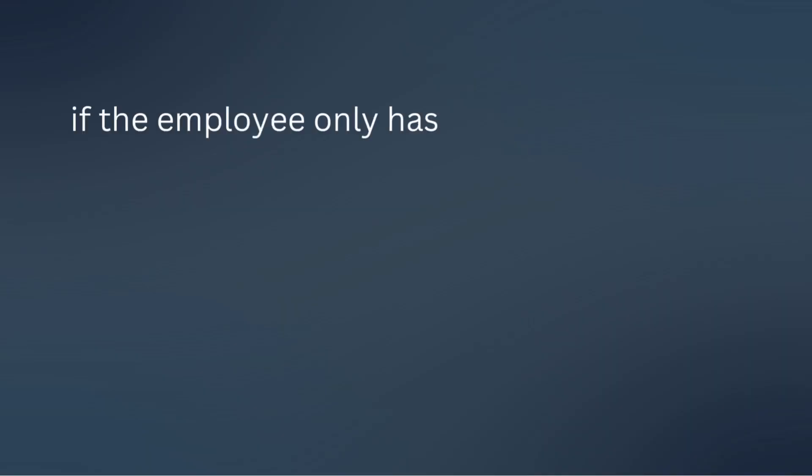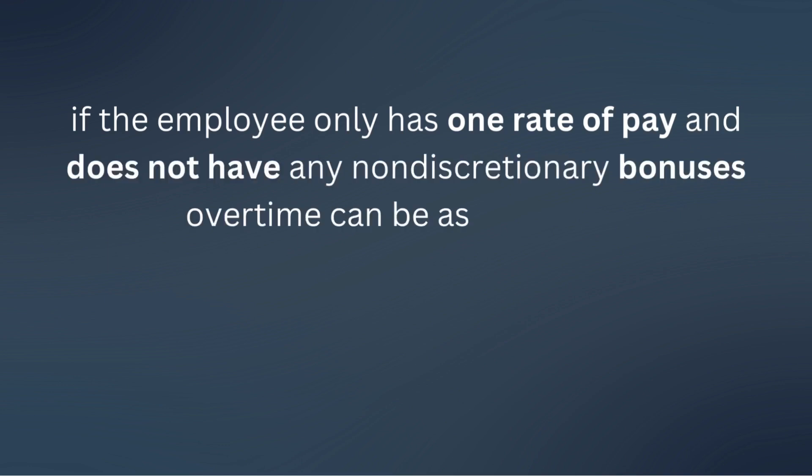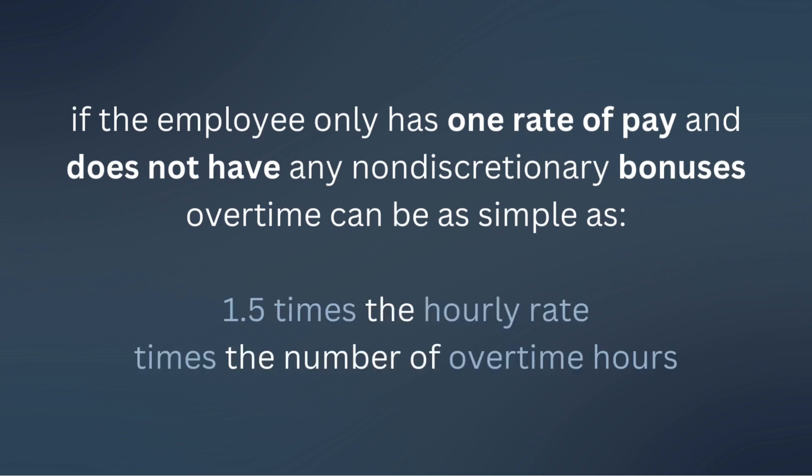If the employee only has one rate of pay and does not have any non-discretionary bonuses, overtime can be as simple as one and a half times the hourly rate times the number of overtime hours worked. But if an employee has different rates of pay or receives non-discretionary bonuses, you do have to factor everything in and take the total compensation divided by the total hours worked. That is your true regular rate of pay, and that is the rate you use for the overtime premium calculation. Depending on what payroll system you have, this may be easier in some systems than others, and you may have to go outside the system to manually calculate and input it.